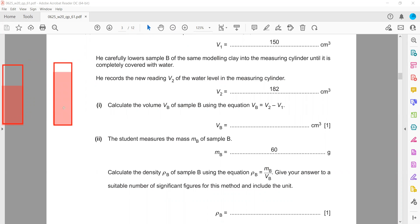The volume changed to 182 cm³. The new volume is 182 cm³, so the volume of the object is 182 minus 150 (V₂ minus V₁), which equals 32 cm³. The mass is 60 g, so to calculate the density: 60 divided by 32 gives a density of 1.88 grams per centimeter cubed.